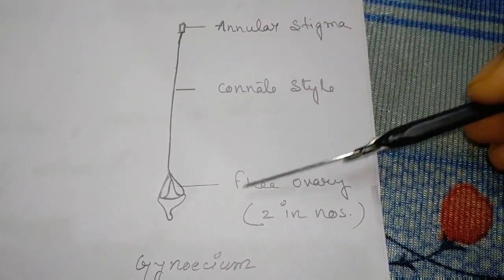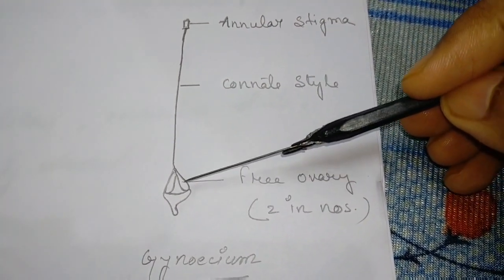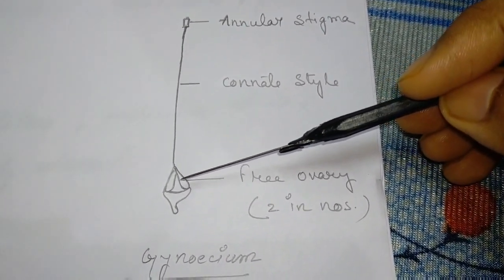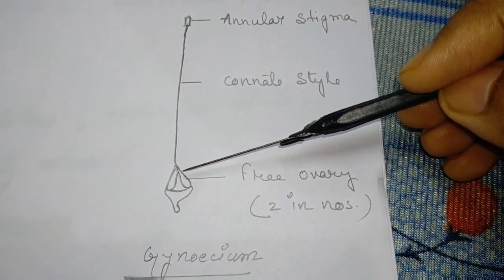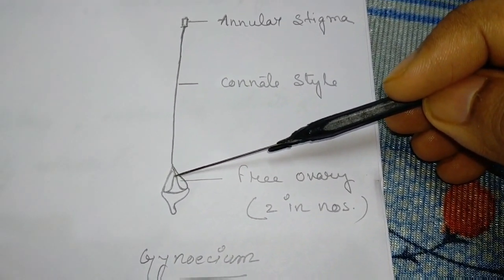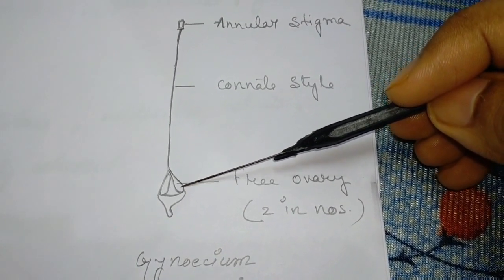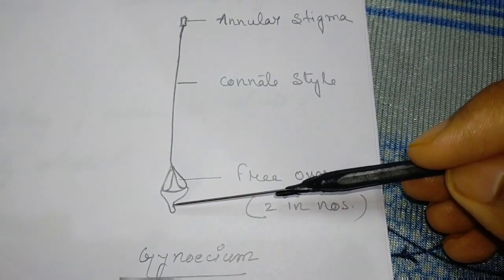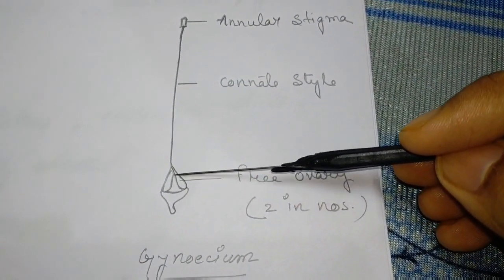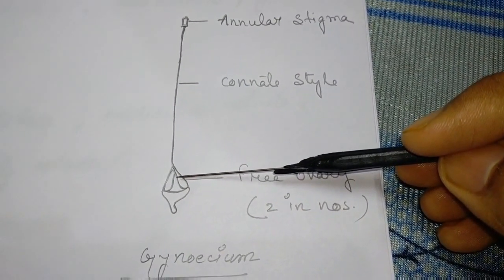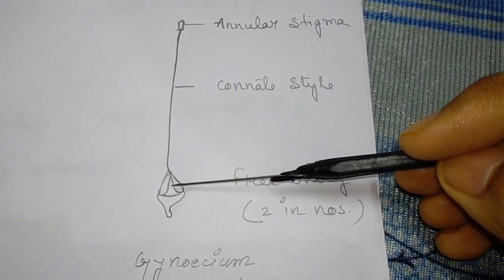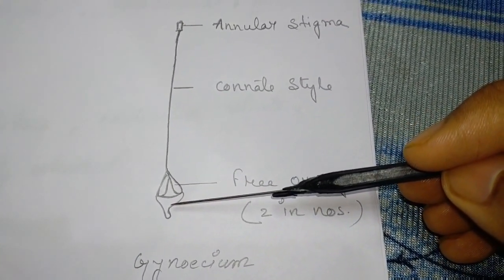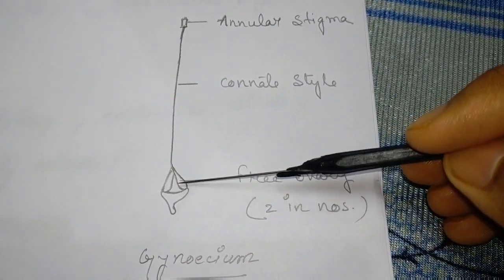In the gynoecium part of the periwinkle flower, two carpels are present — it is bicarpellary and syncarpous, meaning it is fused. The ovary is superior — the ovary is above the thalamus. The ovary is long and elongated. The placentation is ventral with numerous ovules in the two chambers.